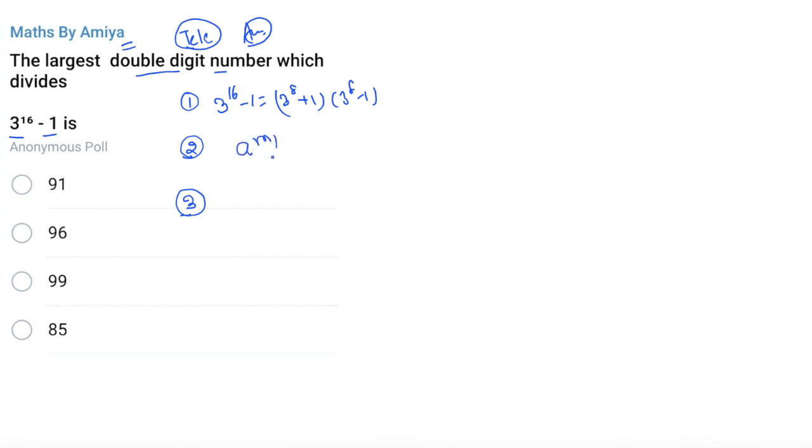If we have a^m raised to power n minus 1, where m and n are integers, it's always divided by a^m minus 1. Either you need to check this one or you need to go for cyclicity. Cyclicity only if you have a^m raised to power n minus 1 case. Options have been given, so I am not going to use this method.